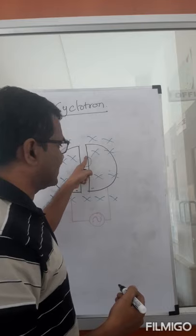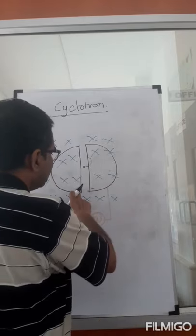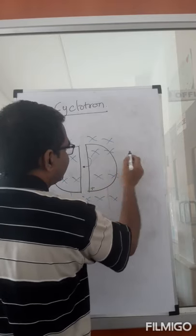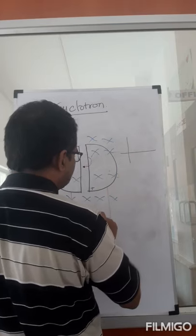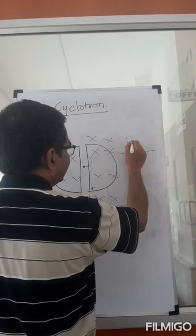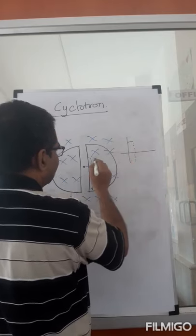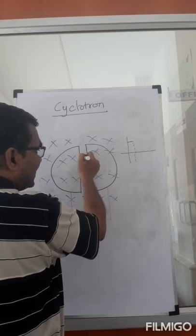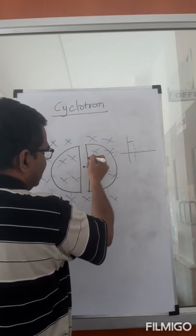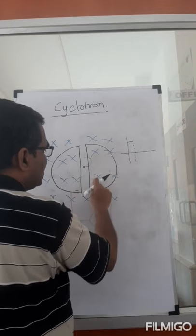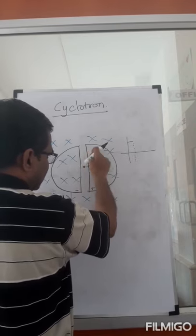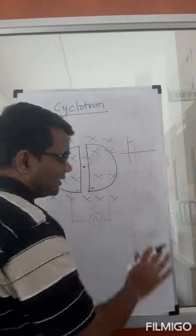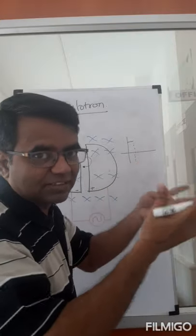As the charge comes back to the gap between the two D's, I switch the polarity — because I have an alternating supply. So as it exits the first D, this D is now positive and the other is negative, which repels the positive charge from one side and attracts it to the other. So it gets accelerated again across the gap. Once inside the second D, again it's in a Faraday cage — no electric field effect, but speed will not change, so it makes a half circle there and comes back.